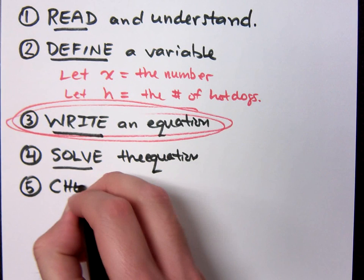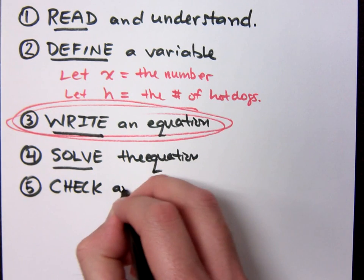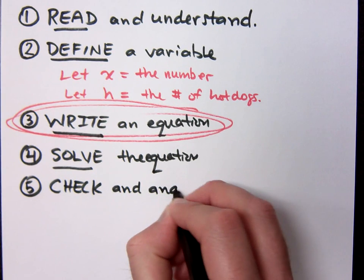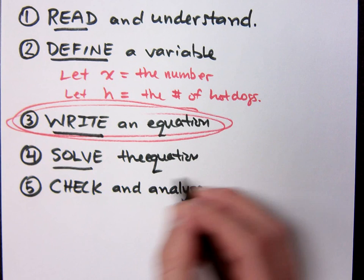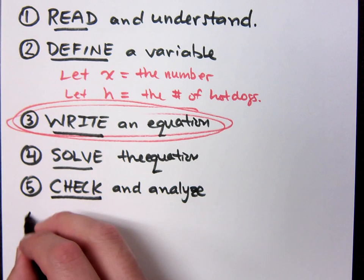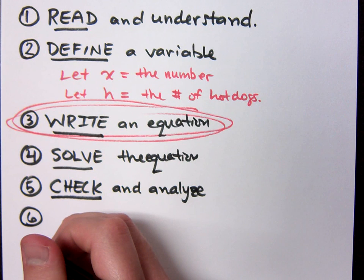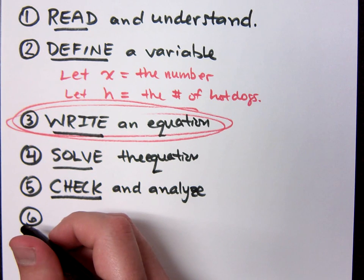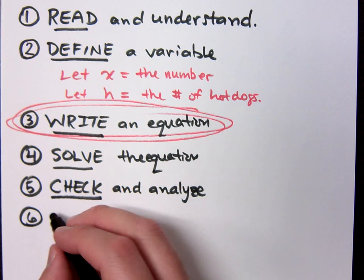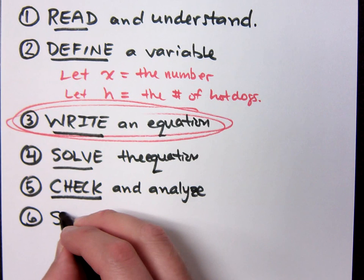The fifth thing that you want to do is check and analyze. Make sure that your answer makes sense. Again, if you come up with, oh, the cost of a hot dog is negative $20. Number one, why is it negative? Number two, really? $20? I guess if you're in a fellow stadium, that's about right, isn't it?